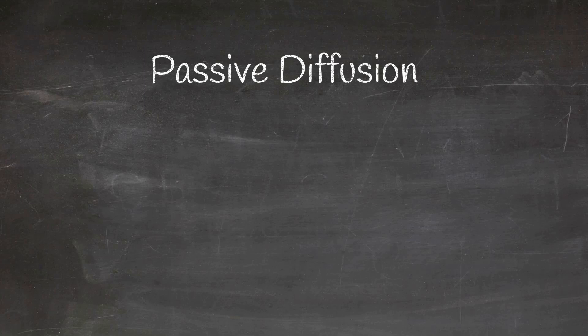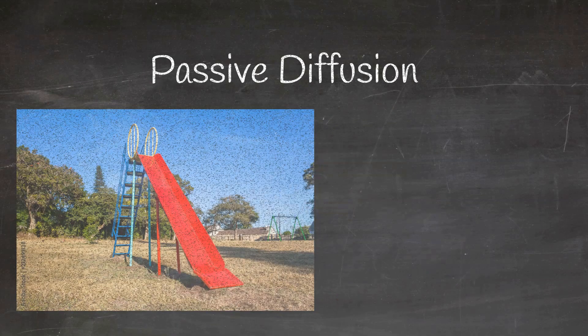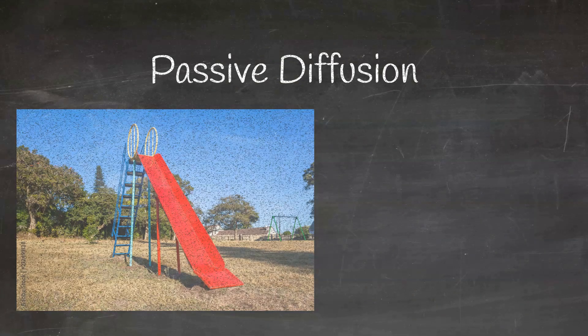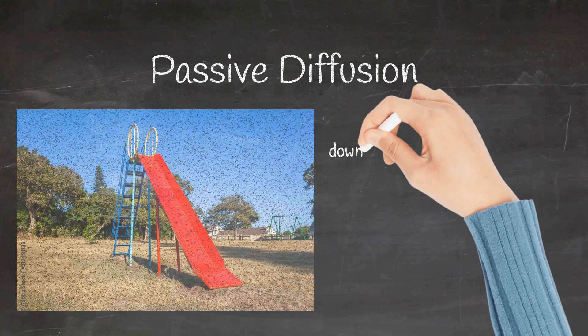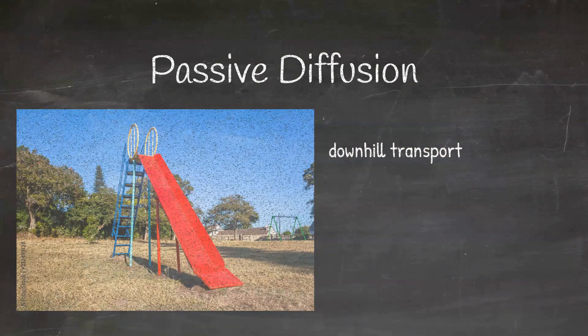Firstly, let's see what is passive diffusion. Passive diffusion is just like moving in a slide. You don't have to spend any energy to move from the top to the bottom because it's a downhill transport. Similarly, in passive diffusion, the drug moves from a higher concentration gradient to a lower concentration gradient. Thus, there is no expenditure of energy. It is a downhill transport.